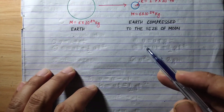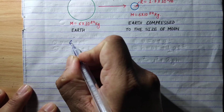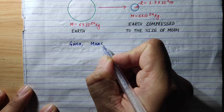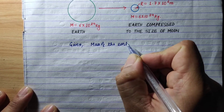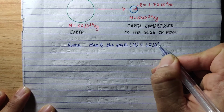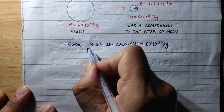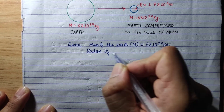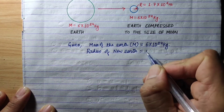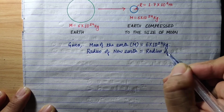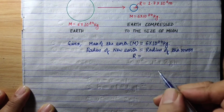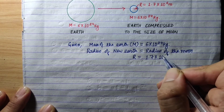Given: the mass of the Earth is 6 × 10²⁴ kg. The radius of the new compressed Earth equals the radius of the Moon, which is R = 1.7 × 10⁶ meters.